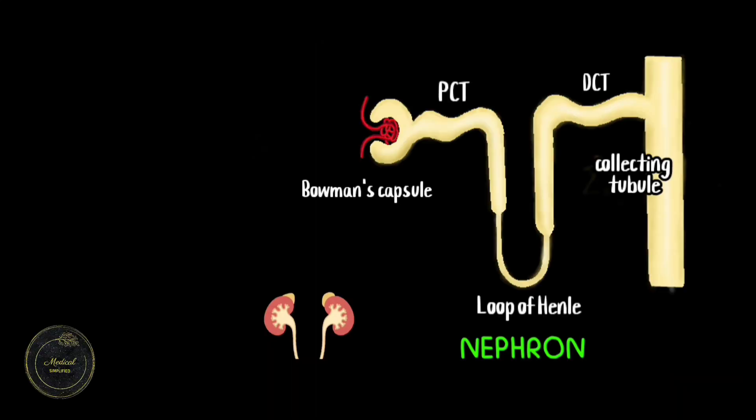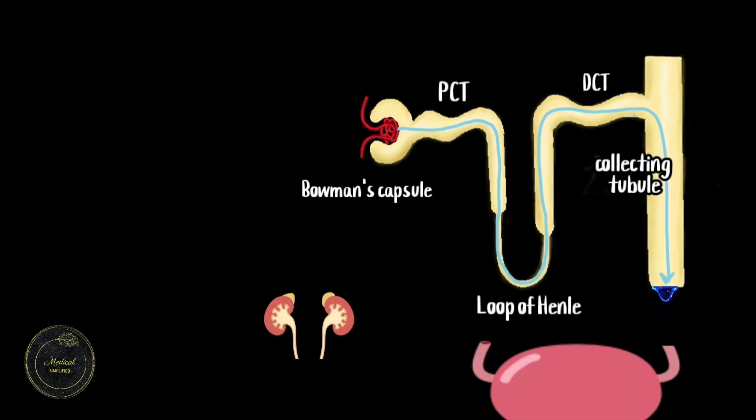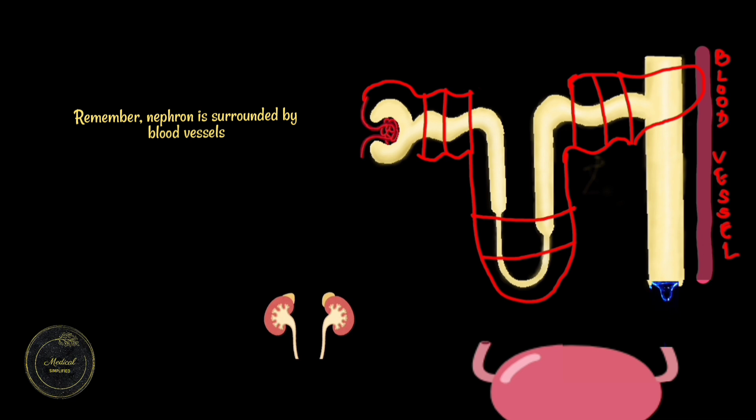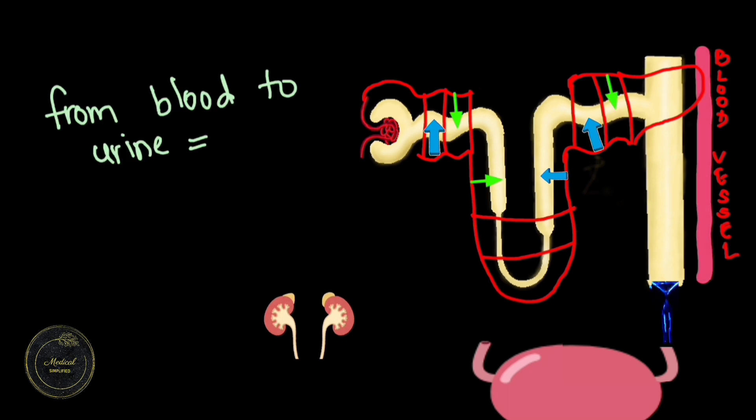Kidneys as we know are made up of multiple nephrons which use the blood and filter it to make the urine. We should remember that the nephron is surrounded all around by blood vessels. The nephrons continue to remove the waste material from the blood and add it to the urine.